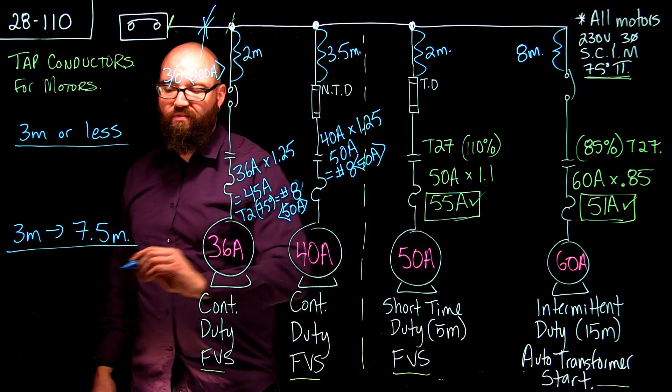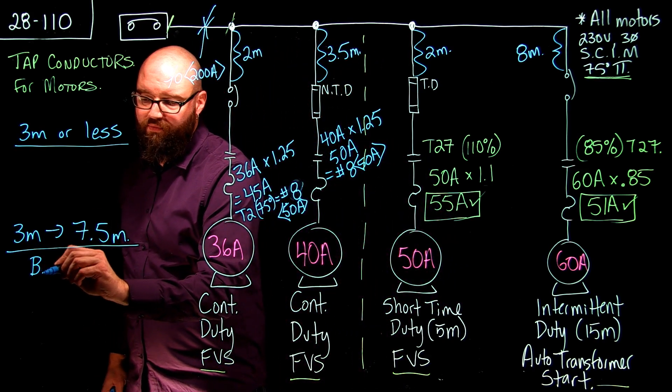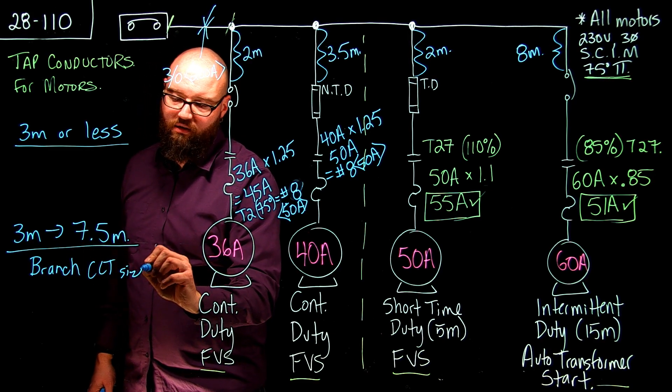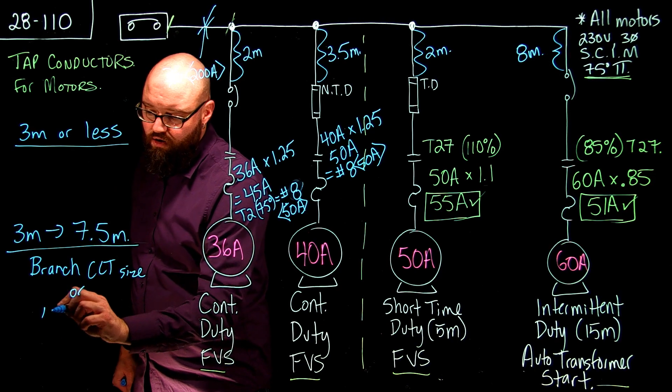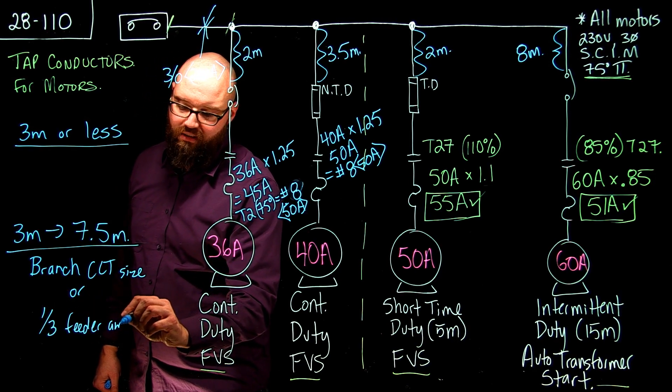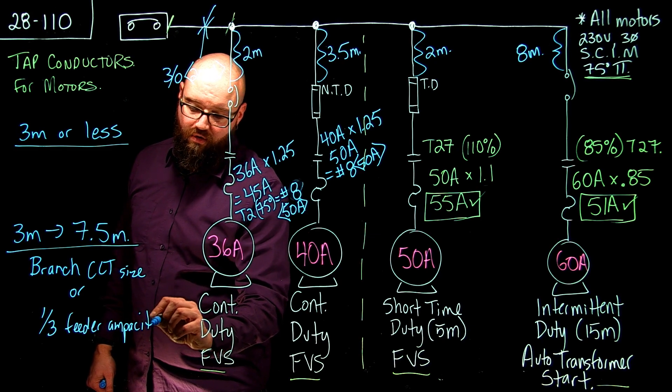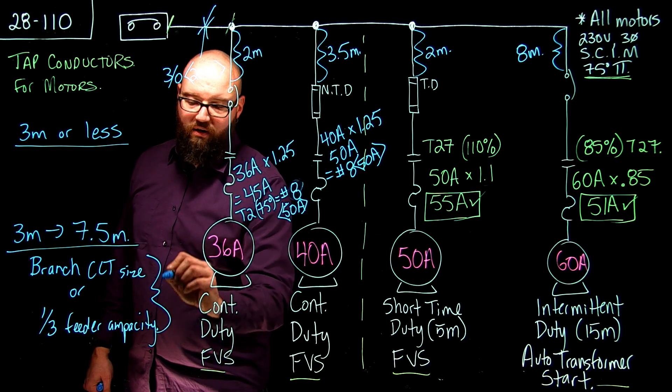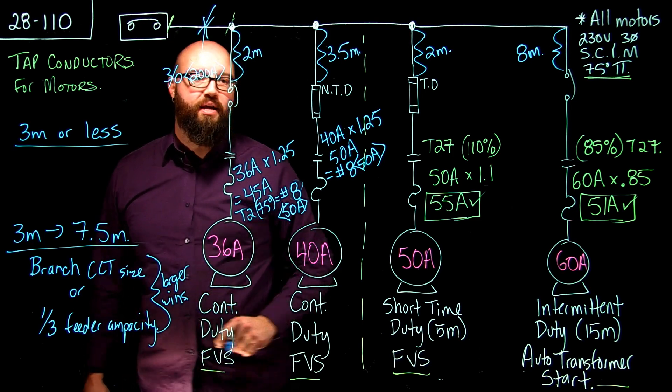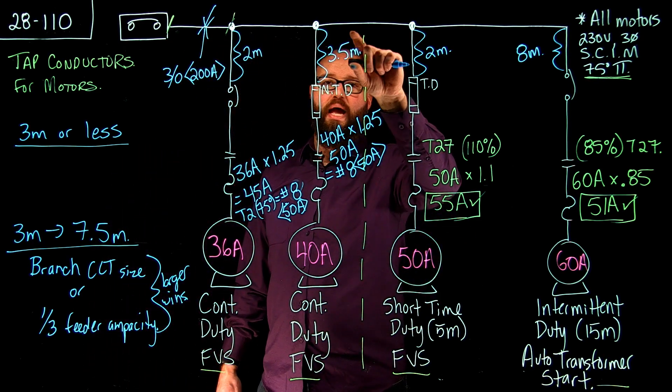We are between 3 meters and 7.5 meters and there's something special we got to do there. When we're between 3 meters and 7.5 meters we're going to go either the branch circuit size or one-third the feeder ampacity. Whichever is bigger